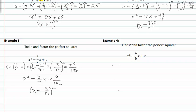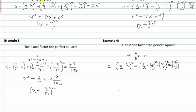In example four, we again find c using the same formula: one-half b squared. Substituting six-fifths in for b, we get one-half times six-fifths, squared. We can rewrite that as six-tenths, squared. Notice six-tenths is reducible, so I'm going to reduce that fraction before I square it. That's three-fifths squared, which gives me nine twenty-fifths. So I take nine twenty-fifths, put it in for c, rewrite my perfect square trinomial, and then factoring gives me x plus three-fifths, quantity squared.